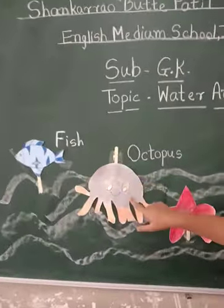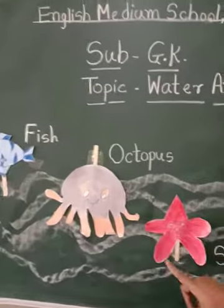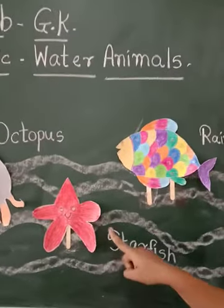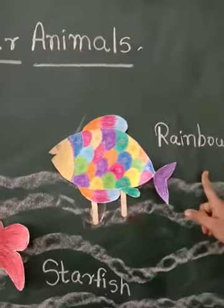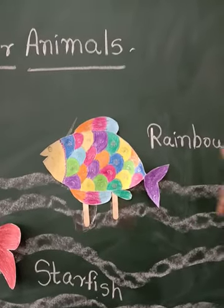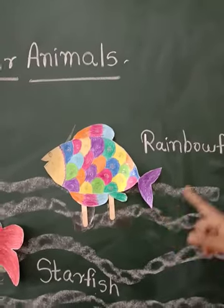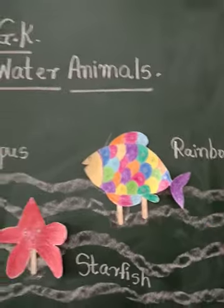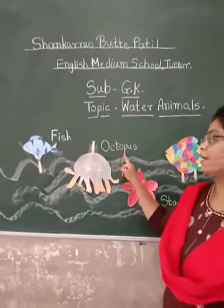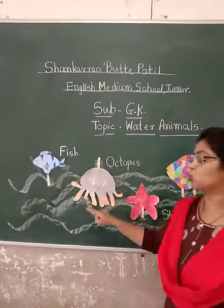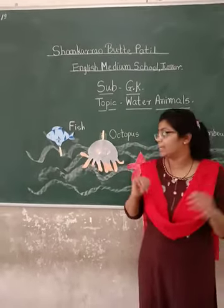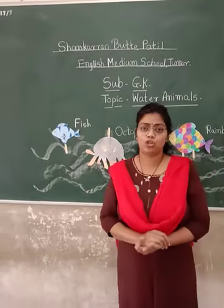Fish, octopus, starfish — because it looks like a star — and very beautiful rainbow fish because it is very colourful. All colours that fish is having. Octo means eight, and that octopus is having eight legs. And this is a small fish.